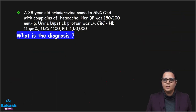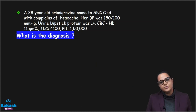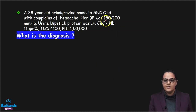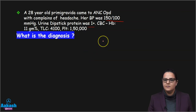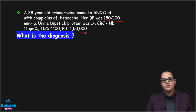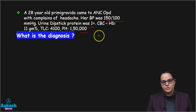Let's go through a few questions. First: a 28-year-old primigravida comes to ANC-OPD, blood pressure is 150/100, urine dipstick protein is 1+, and platelet is 1.5 lakh. Her blood pressure is obviously more than 140/90 mmHg and urine protein is 1+, so the diagnosis is preeclampsia.